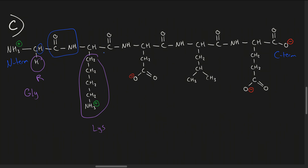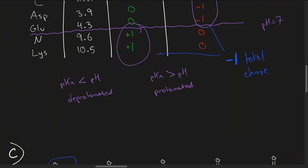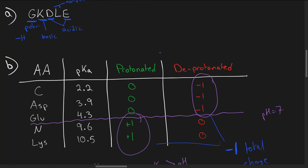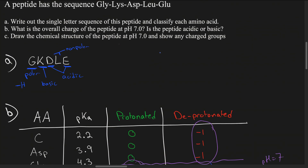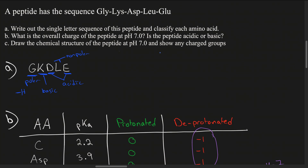This is how you draw the peptide — it's a repeating pattern of N-terminus, amide bonds between amino acids, and C-terminus. All you have to do is show the R groups in the correct order. That's how to solve all three parts of this problem.